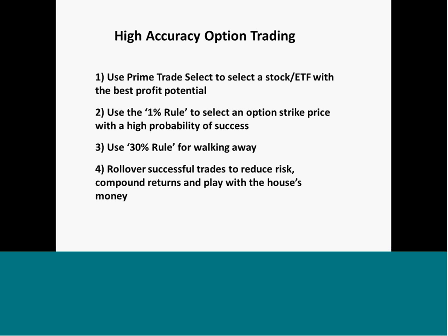With my high-accuracy option trading, I use what I call Prime Trade Select to select a stock or ETF with the best profit potential. We'll briefly go through the Prime Trade Select process and I'll show you how I use this to identify stocks with good profit potential. Then I use what I call the 1% rule to select an option strike price that has a high probability of success — a very simple rule of thumb — which I'll show you how to apply.